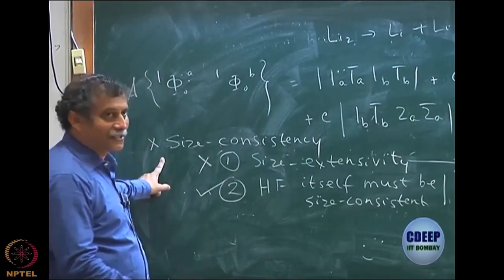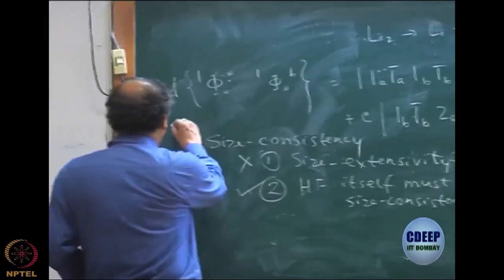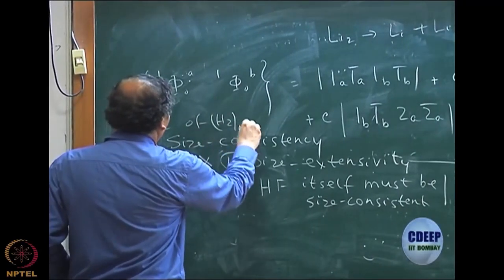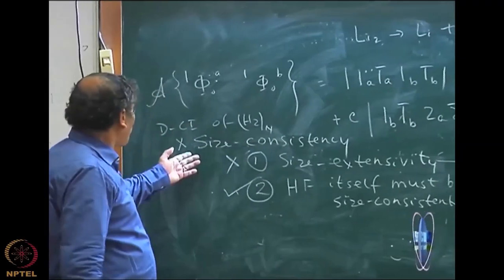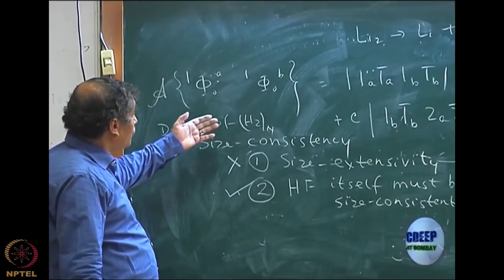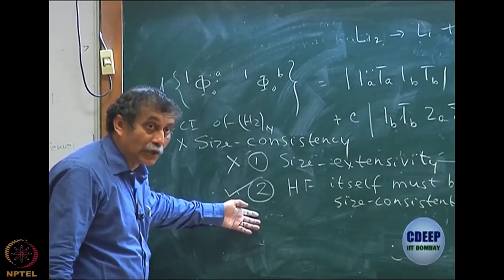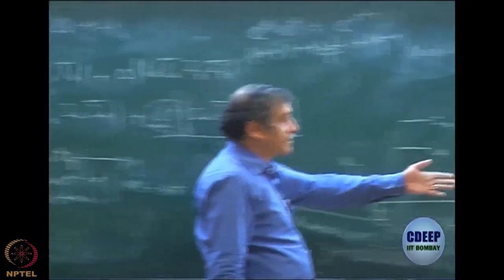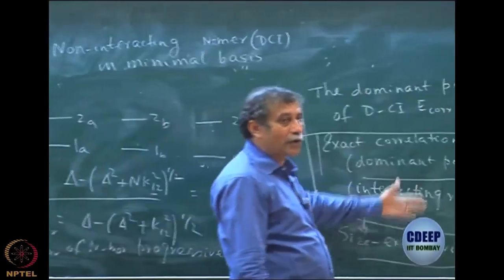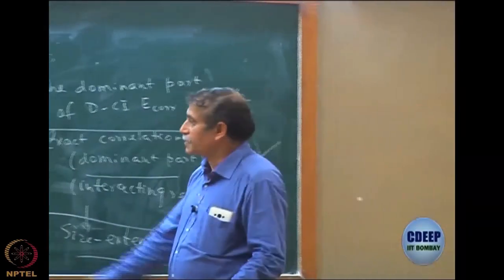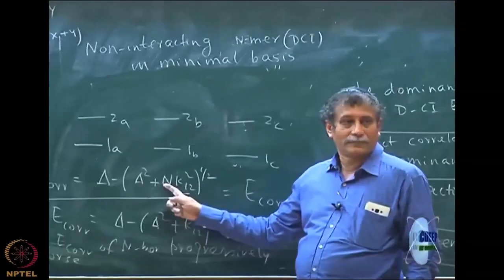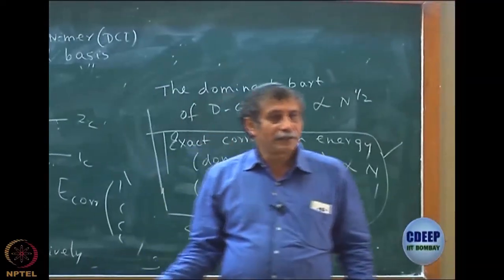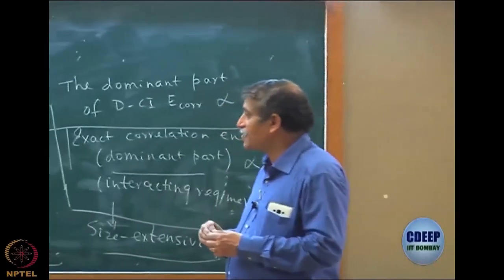So for DCI of H₂ n-mer, it is not size consistent — not because the Hartree-Fock was bad (Hartree-Fock was actually okay) but because the theory of DCI is no longer size extensive. It gives square root N. N should have come outside linearly, but that is not happening. That is very critical to understand — because of the CI structure of the correlation energy, solving the quadratic or iterative equations introduces this square root N dependence.